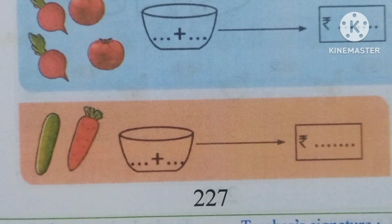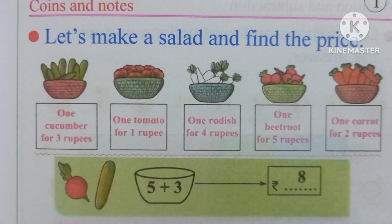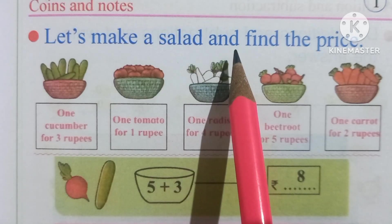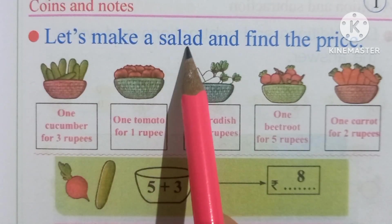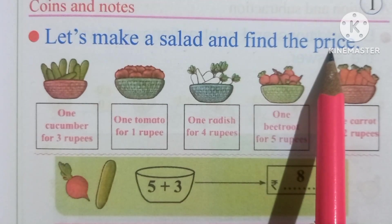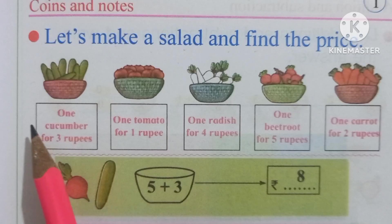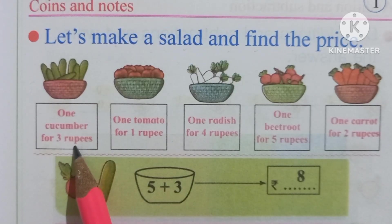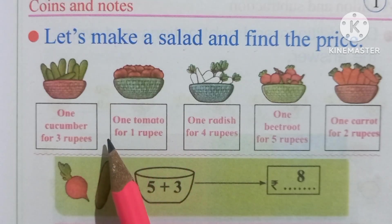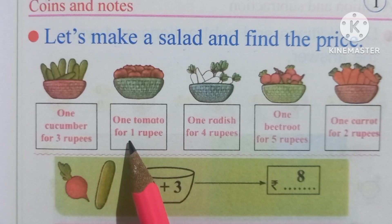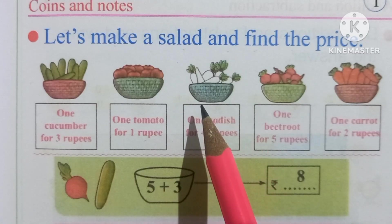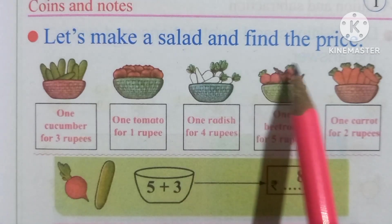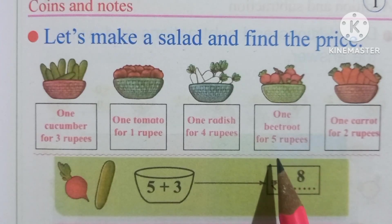Now see page number 227. We have to make a salad and find its price. Here is a cucumber — the price of one cucumber is Rs. 3. Here are tomatoes — the price of one tomato is Rs. 1. Here are radishes — the price of one radish is Rs. 4. Here are beetroots — the price of one beetroot is Rs. 5.